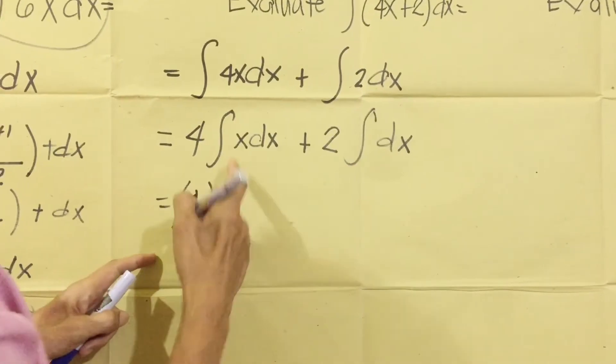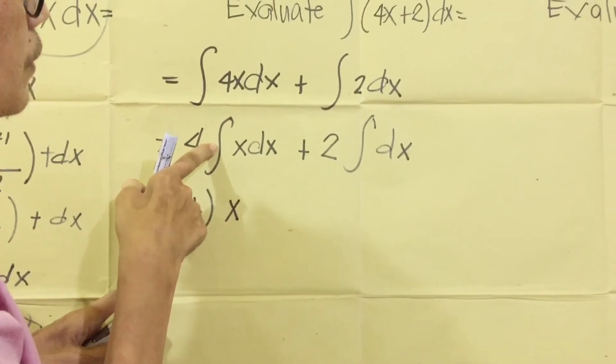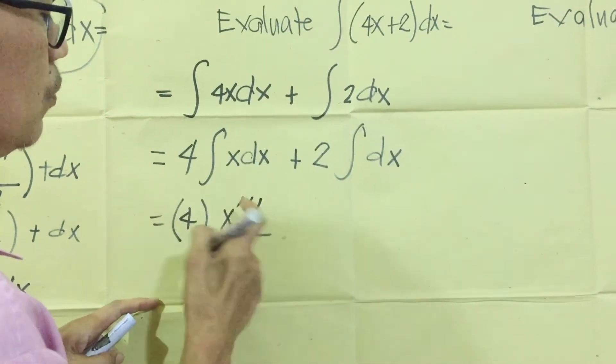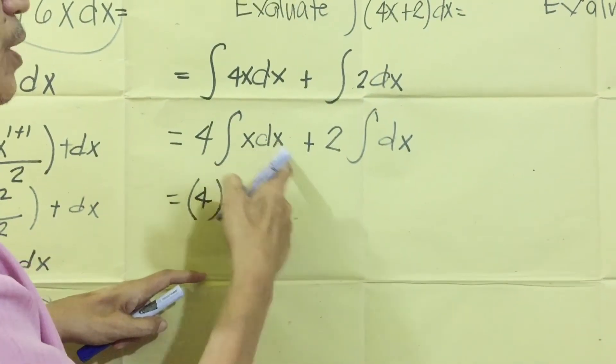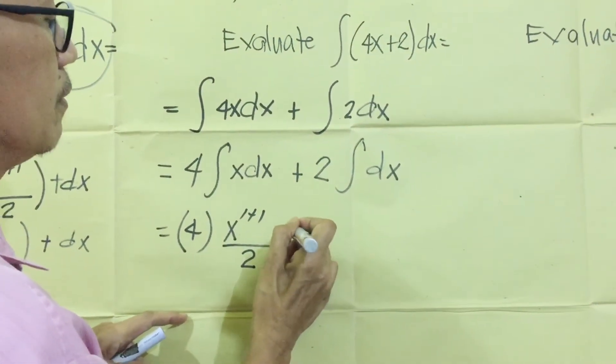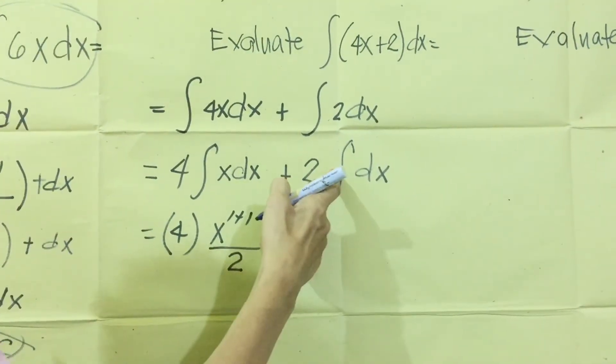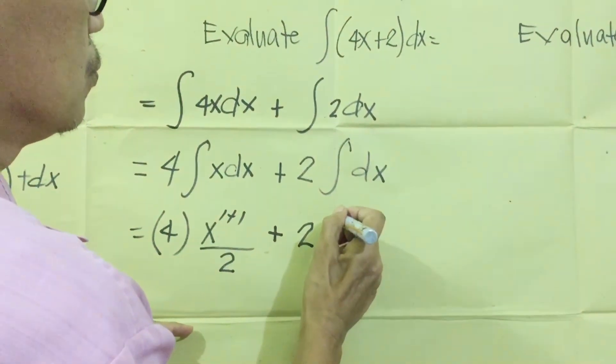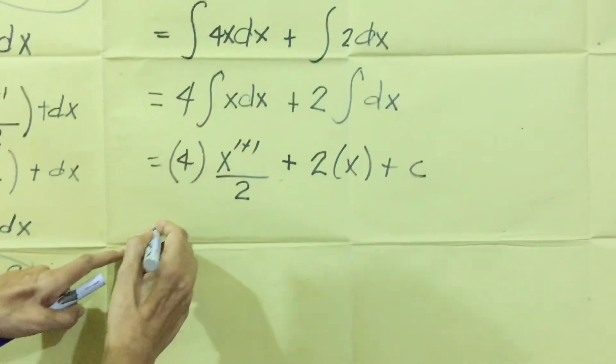We are going to use formula number four. Four times the X variable. To extract this one, we add the exponent. One plus one over one plus one equals two. DX is common. So we can't place it at the end. Because it's common, we place it as one. Plus, two. The problem number one. Integral to DX equals X plus constant.